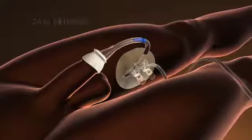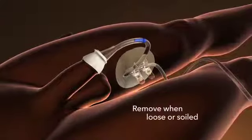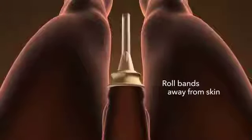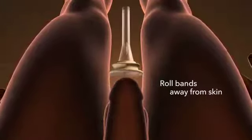Men's Liberty Acute should also be removed if it becomes loose or if it has been soiled. The device can easily be removed by gently rolling the adhesive bands away from the skin.